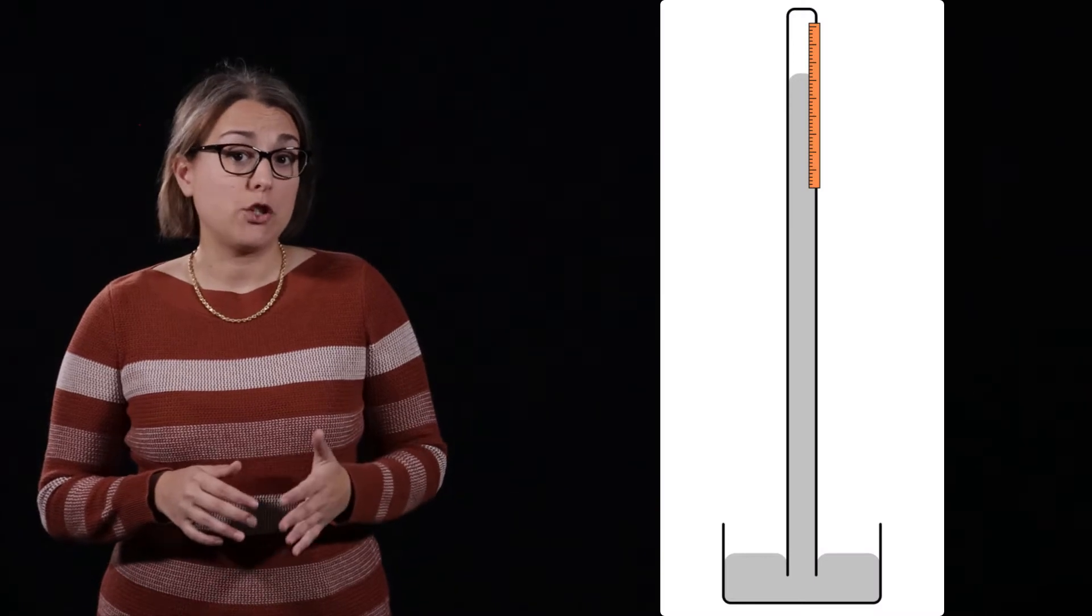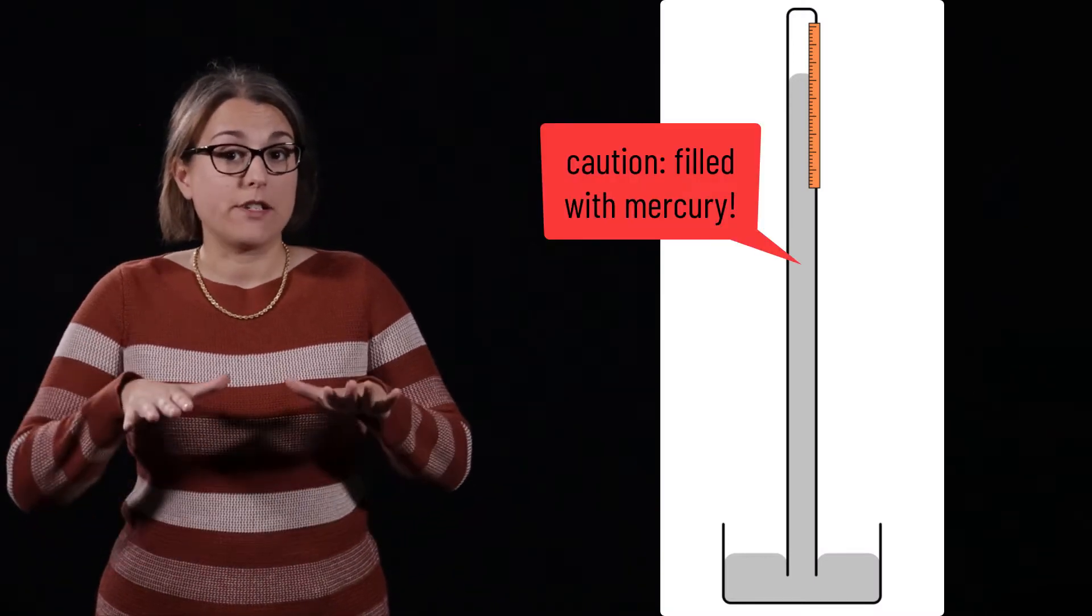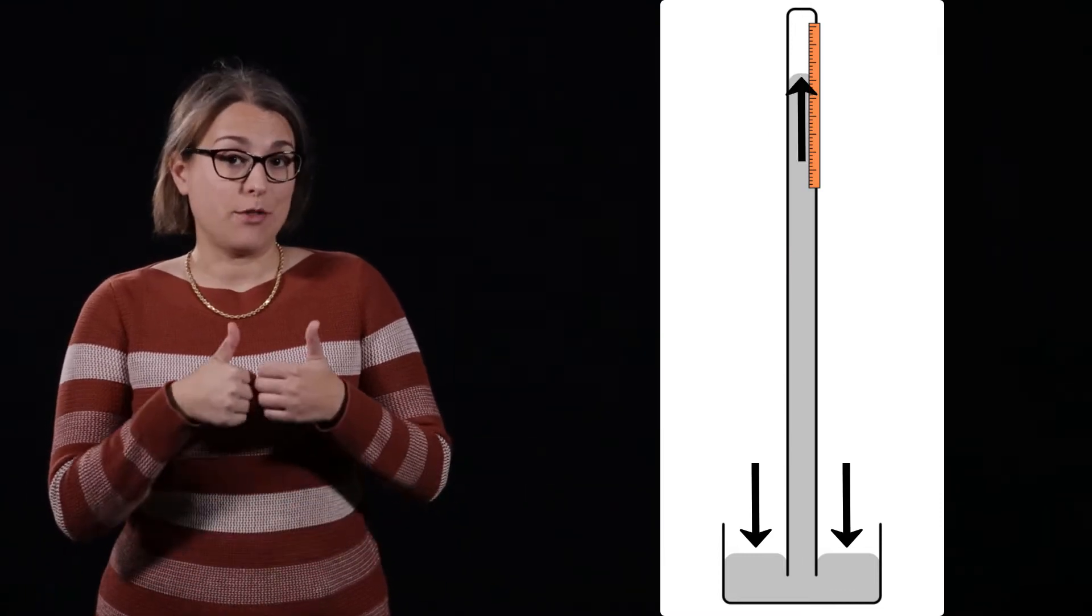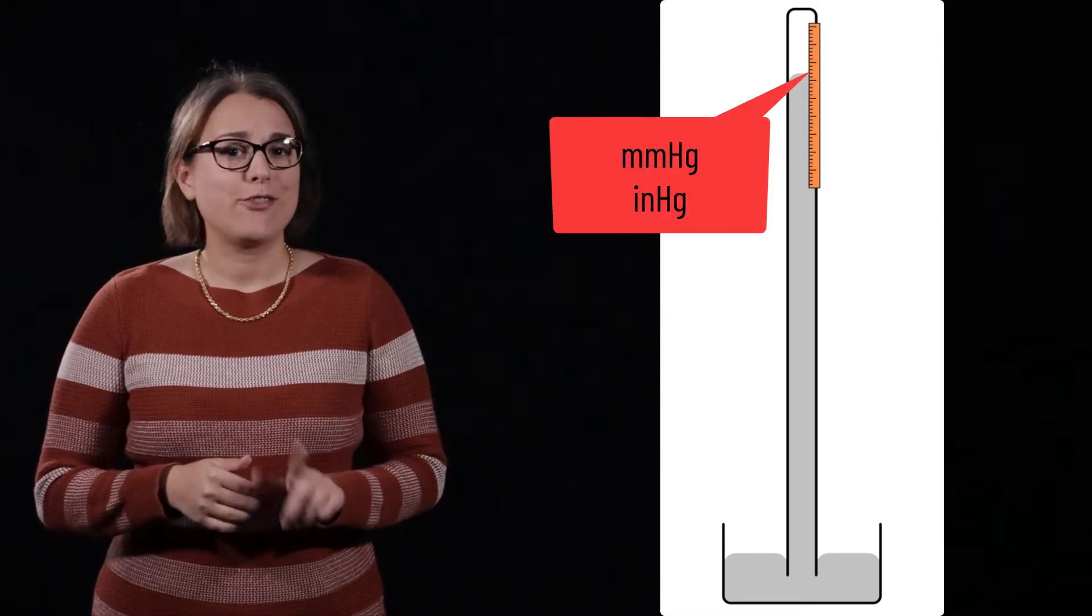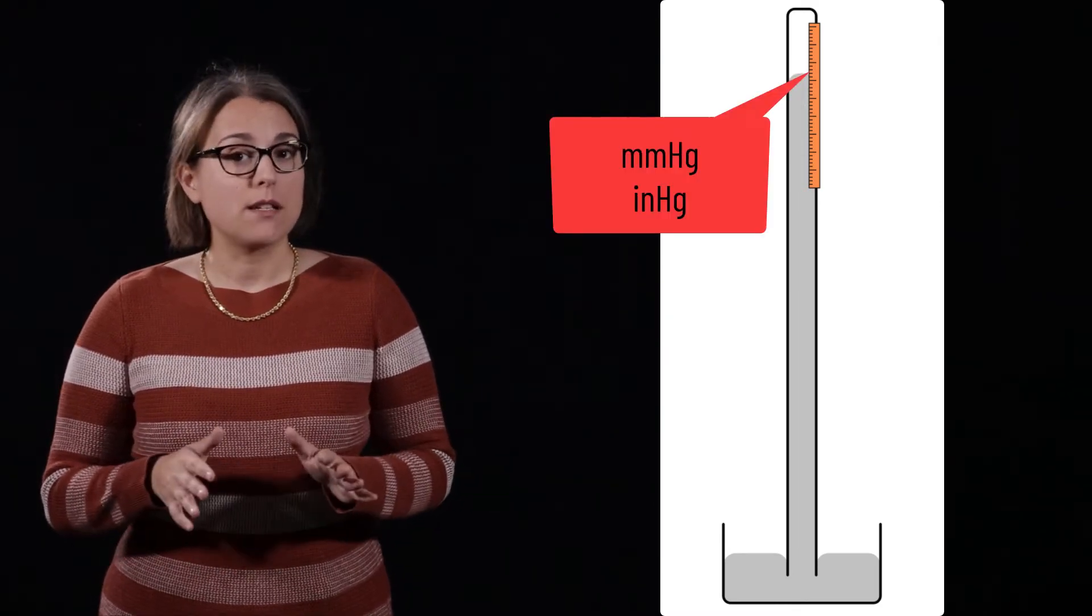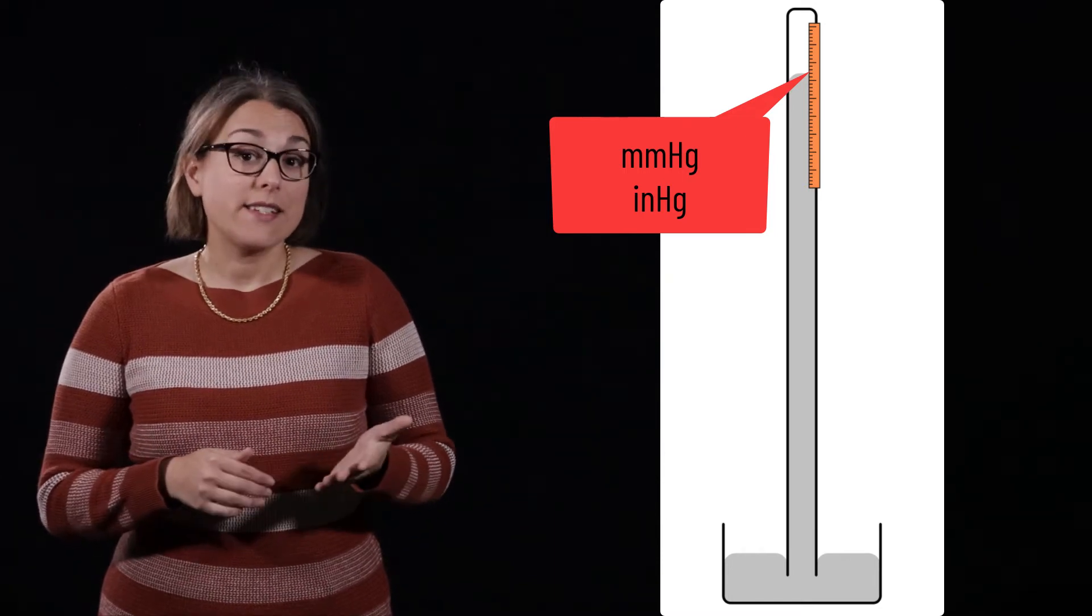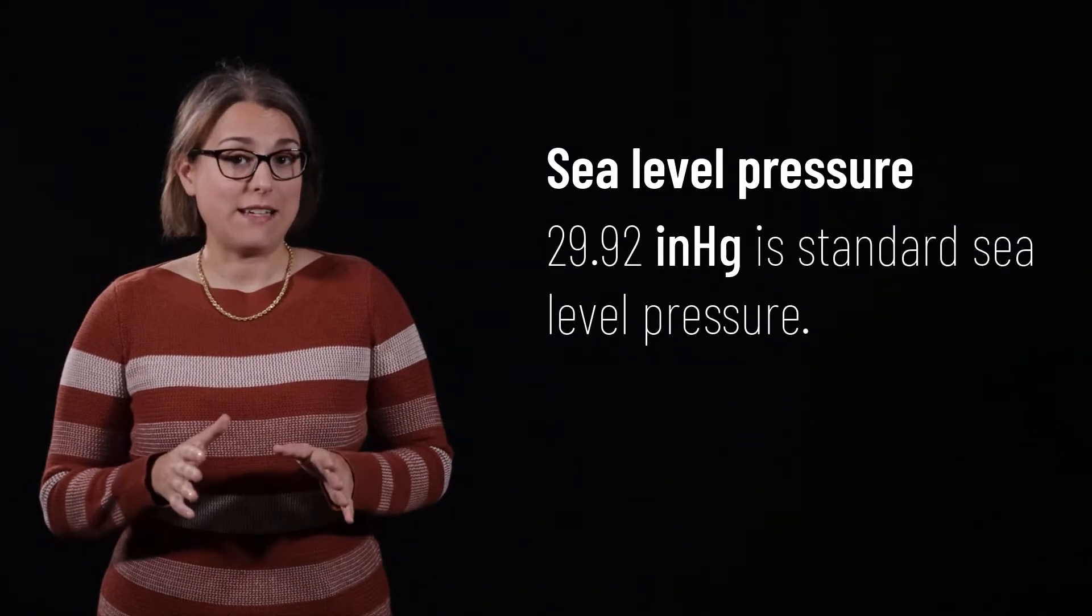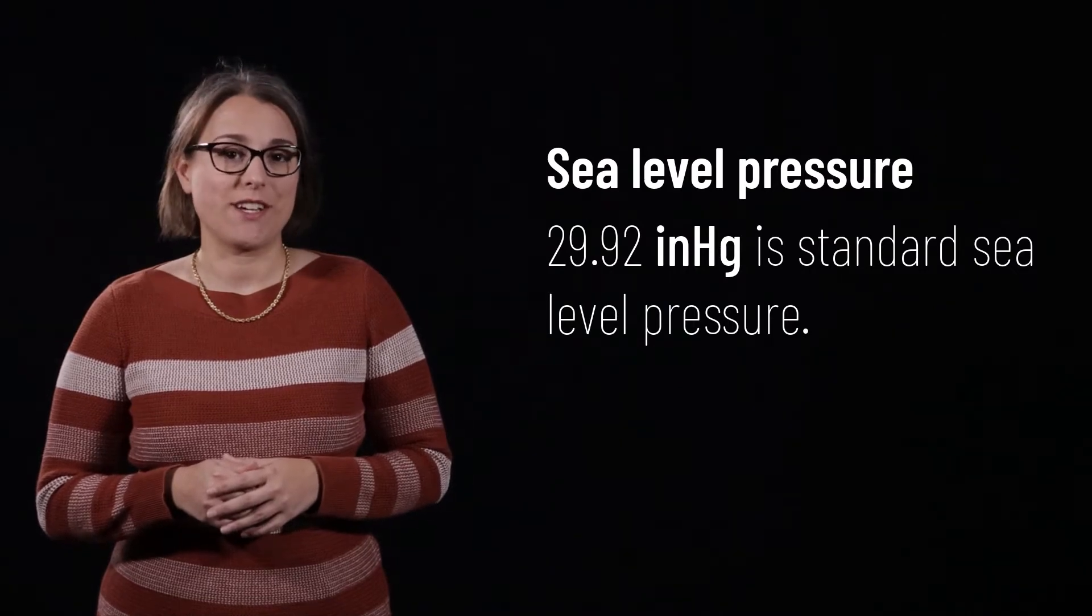Old barometers were made of tubes filled with mercury. As atmospheric pressure increased, more force was exerted on the mercury, which would rise up a vacuum tube and indicate higher pressure. If you've ever heard the units millimeters of mercury or inches of mercury, this is where those units of atmospheric pressure came from. Standard sea level pressure is 29.92 inches of mercury.